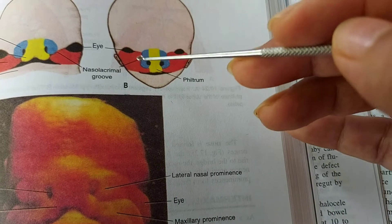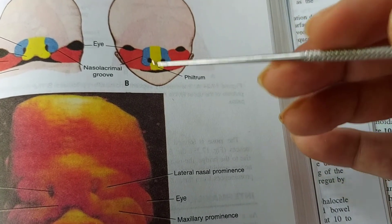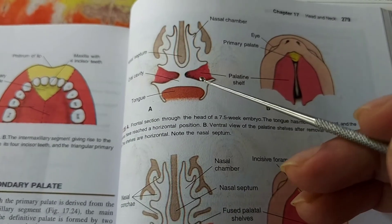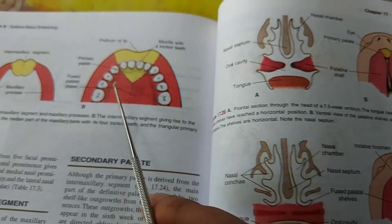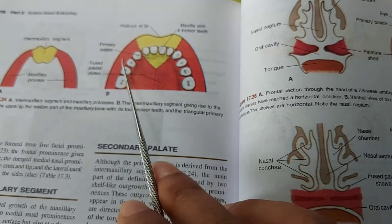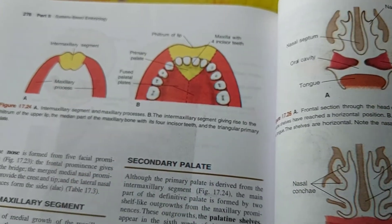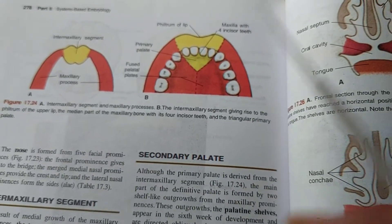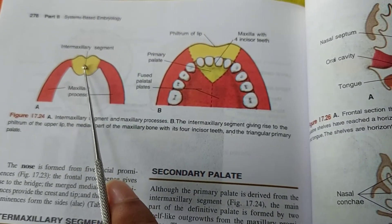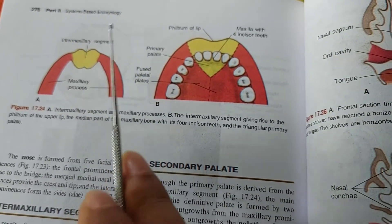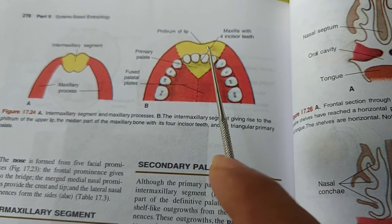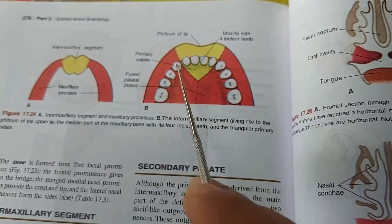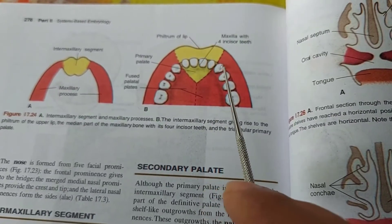To understand development of the nasal septum, we need to look at development of the palate. In the development of the maxillary process, the two maxillary processes fuse to form the intermaxillary segment. This intermaxillary segment forms the upper jaw and part of the palate, which develops from the maxillary process.